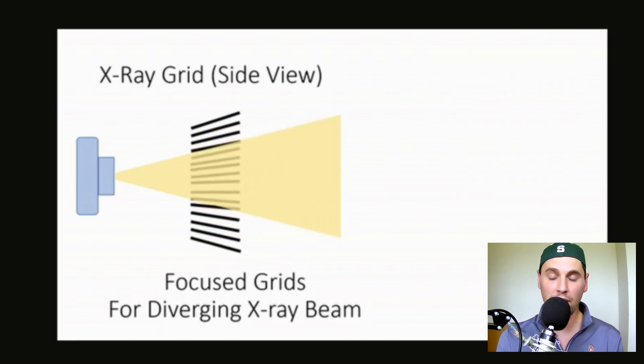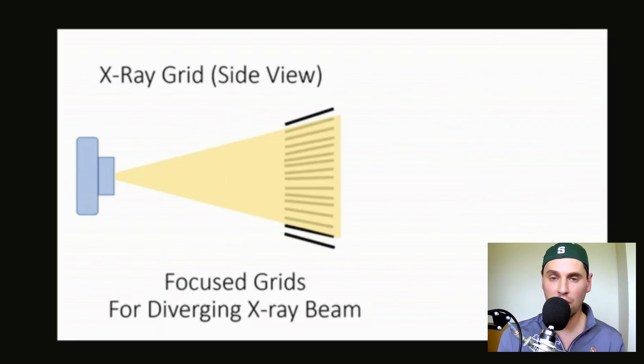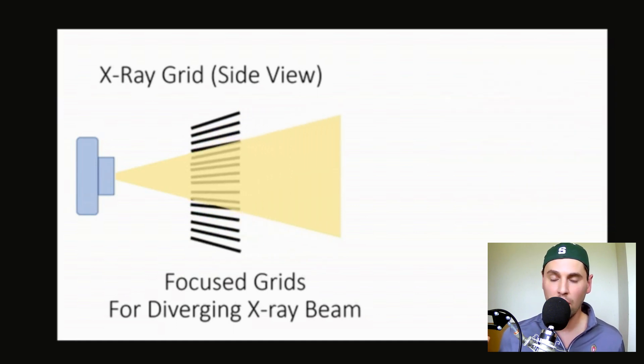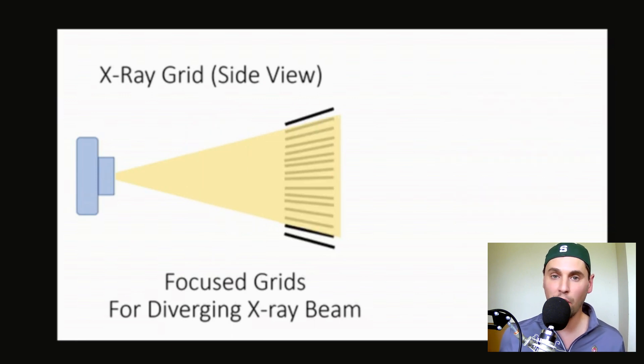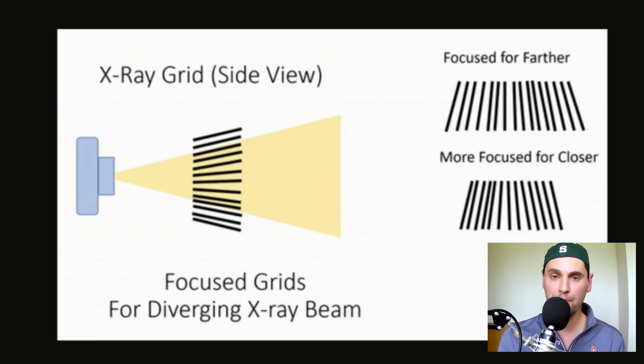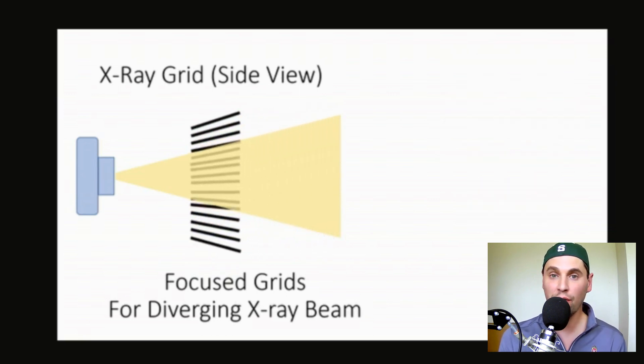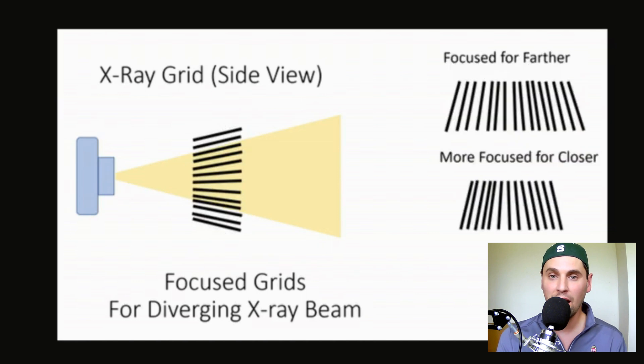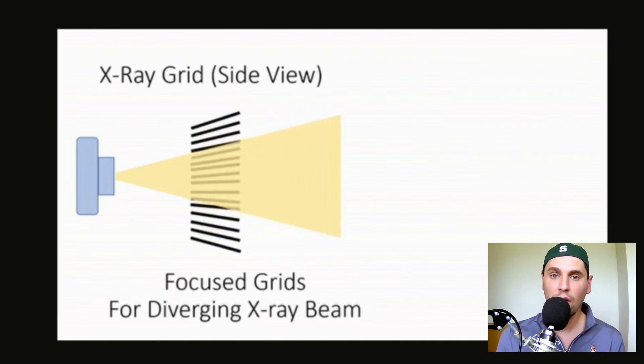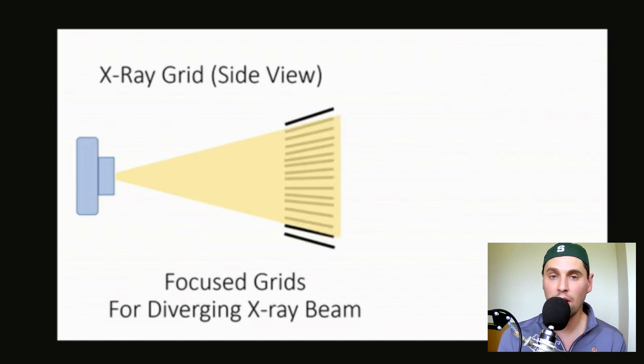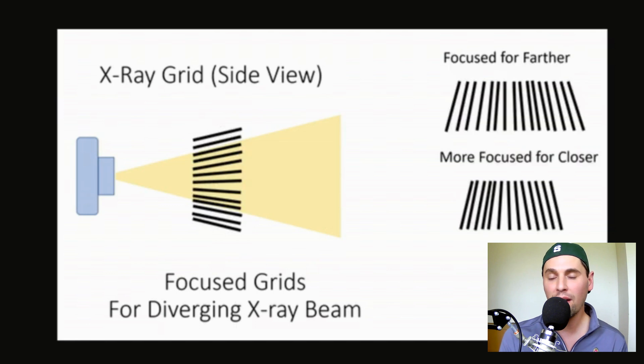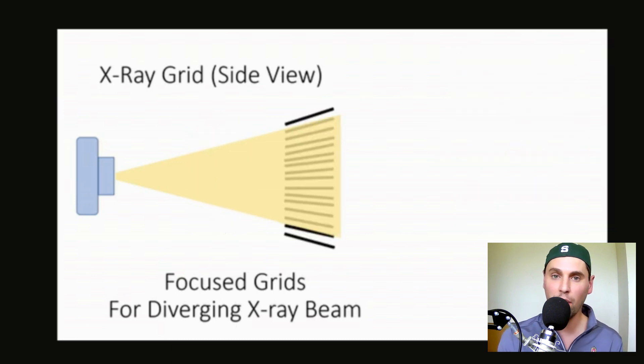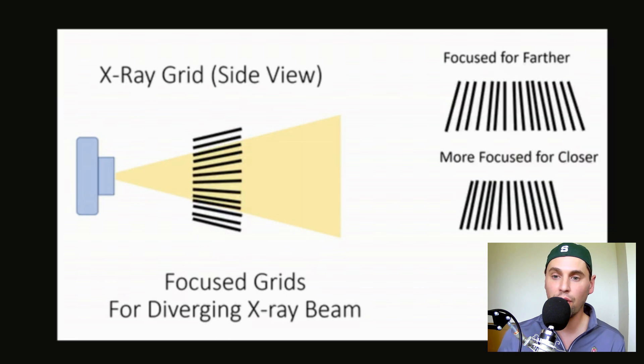If the grid is not focused, then you will have cutoff, which occurs earlier, relatively outside of the outer regions in the field of view, because the grid will start blocking more of the primary photons at that point. So this is the idea of a focused grid. And again, the grid wants to be focused on the focal spot. And that's why you need different grids for different distances from the x-ray source. Because that focusing is different, or the relative angle that you want the septa to be pointed, that changes as you move closer and further away.